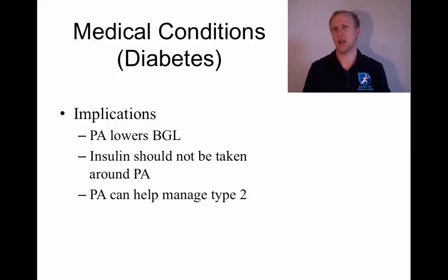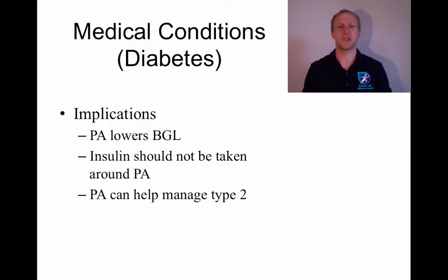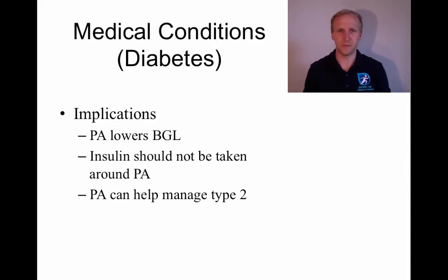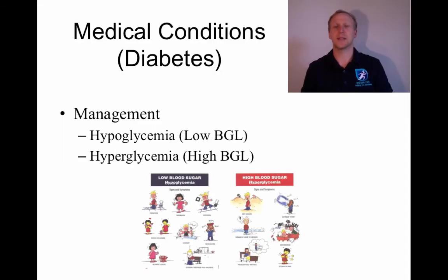Physical activity can also help manage Type 2 diabetes, because it opens muscle cells from the inside, meaning insulin isn't needed. A Type 2 diabetic whose insulin isn't working properly can reduce blood sugar levels simply by doing physical activity — glucose travels into the muscle tissue for energy. As the body uses less insulin, it starts to respond better when insulin is used.